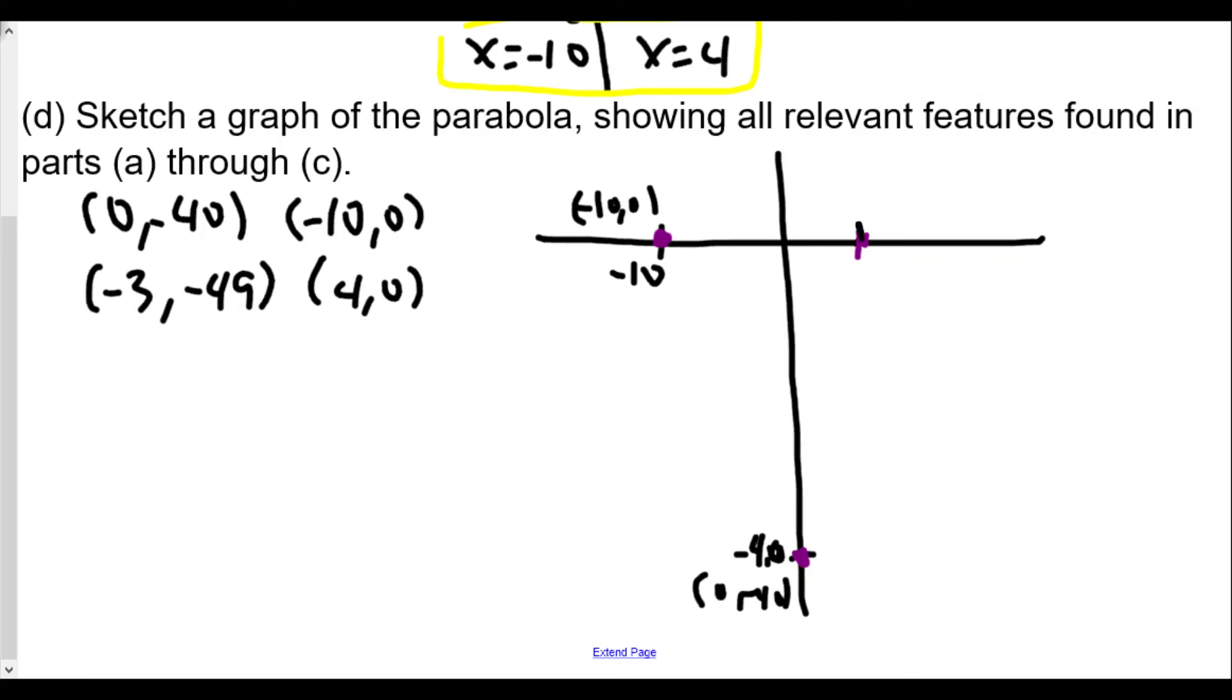So this is 4 comma 0, we'll plot this here. And then we have negative 3 comma negative 49, so negative 3 comma negative 49 will be somewhere over here. This would be negative 3 comma negative 49. And so our graph will look something like this.